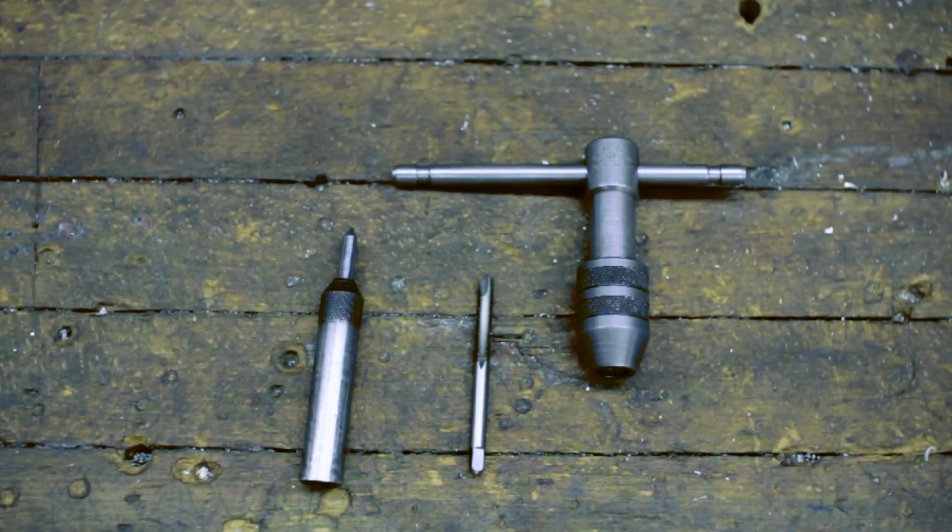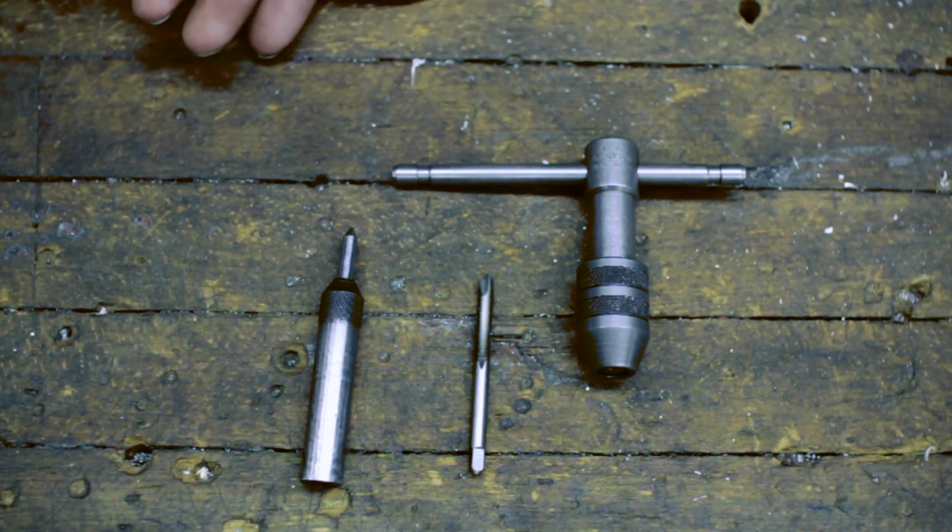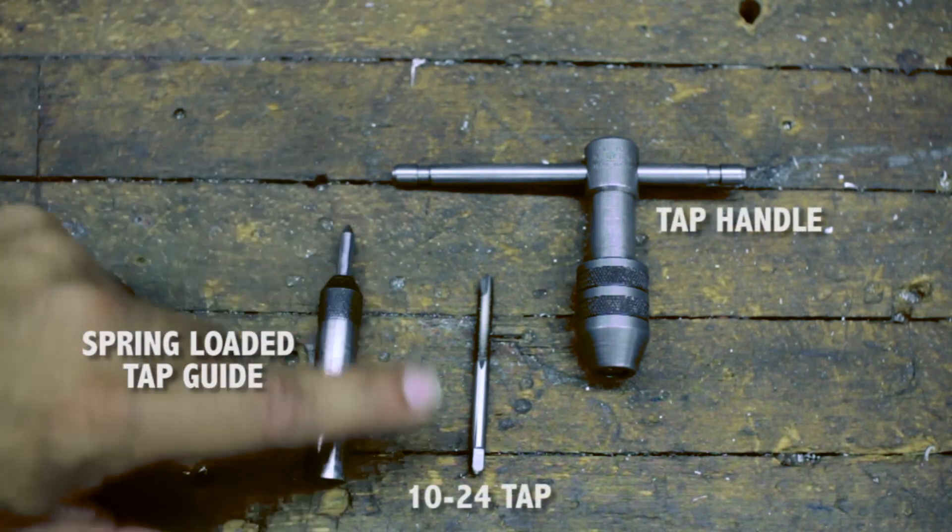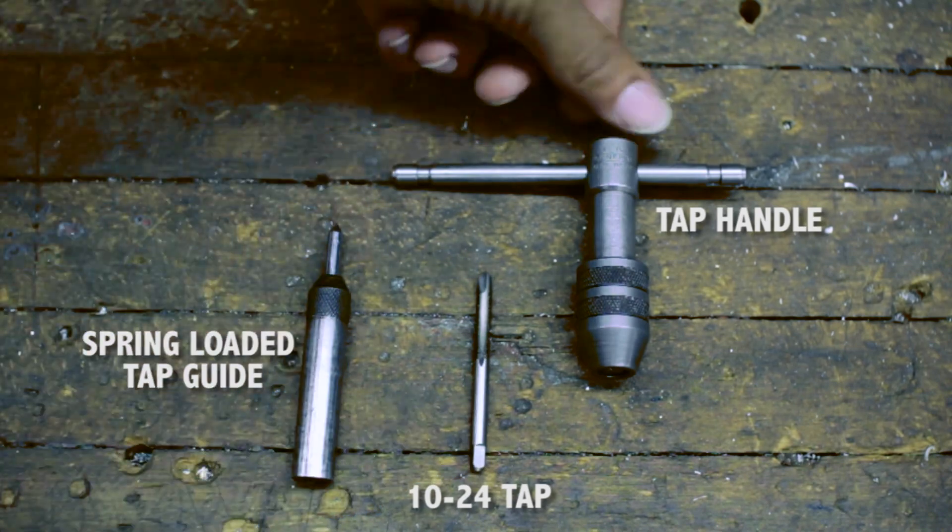Our last process requires cutting a 10-24 thread into our part. You have to use three components to achieve this: a spring loaded tap guide, a 10-24 tap, and a tap handle.